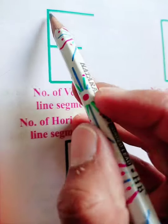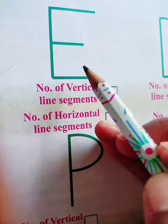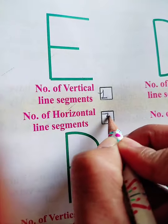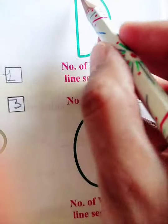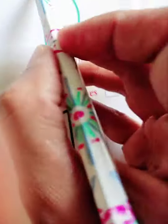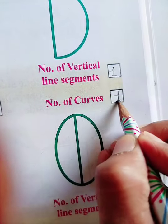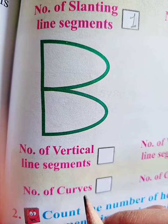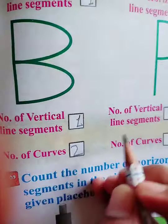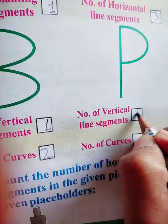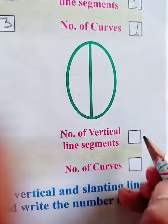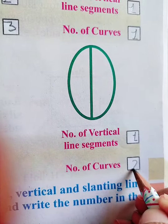Here is E — one vertical line and three horizontal lines. In D, one vertical line and one curved line. In B, one vertical line and two curved lines. P has one vertical line and one curved line.